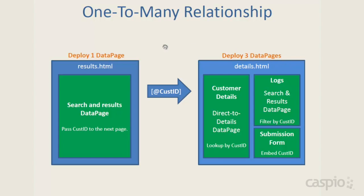What's linking all of these data pages together is a unique customer ID. From the results page we're going to pass that customer ID to the details view, and in the details view all three of those data pages are going to receive this customer ID. If you get stuck along the way, feel free to refer back to this diagram at any time for a refresher.